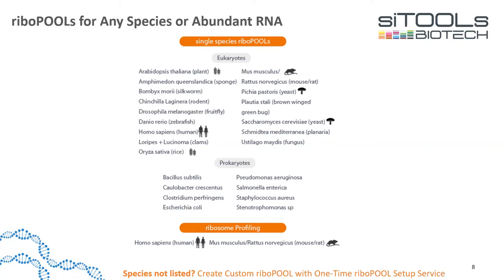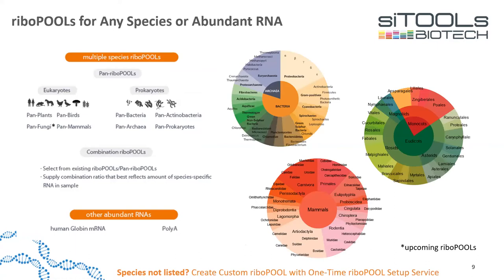Here are our pan Ribopools, which can be used across a variety of species. Our customers' favorite is the pan prokaryote Ribopool, used by scientists studying microbiomes or metatranscriptomics. It covers a wide spectrum of bacteria and archaea and targets 5S, 16S, and 23S rRNA.